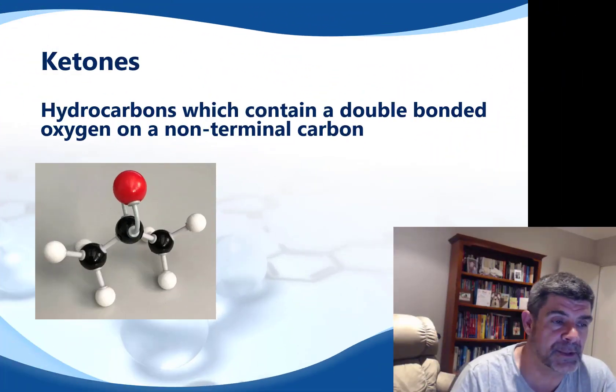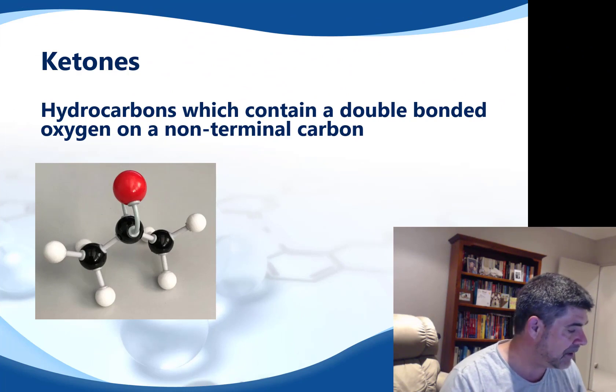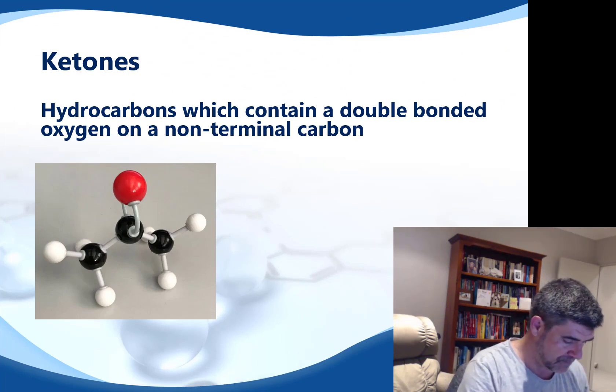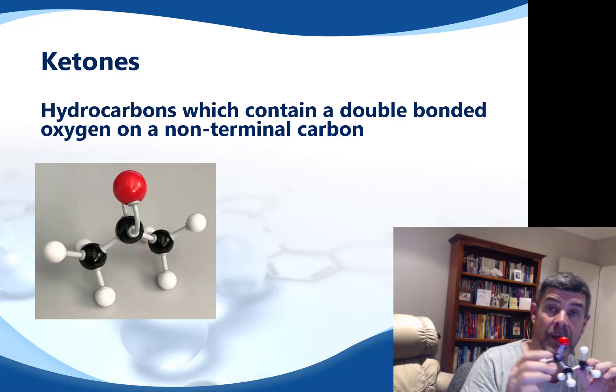The other group we want to look at in this video are the ketones. If I remove my methyl group and go back to my original molecule propanal, and I want to turn it into propanone — the correct name for the corresponding ketone — I switch one of the carbons from one end to the other so that my double-bonded oxygen is now on the central carbon, not on an end carbon. With a seven-carbon chain, the double-bonded oxygen could be on carbon 2, 3, 4, 5, or 6 — as long as it's not on either end — and you'll have a ketone.